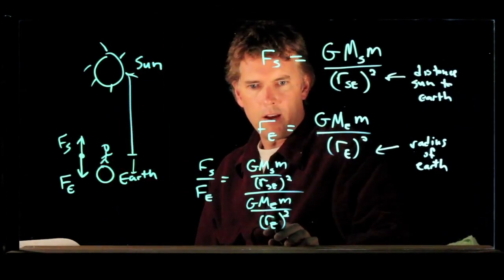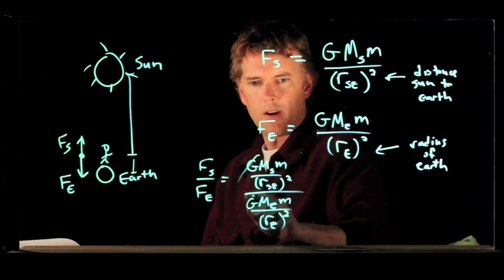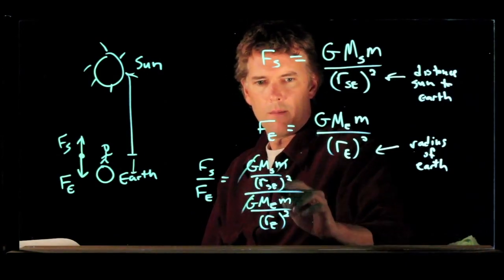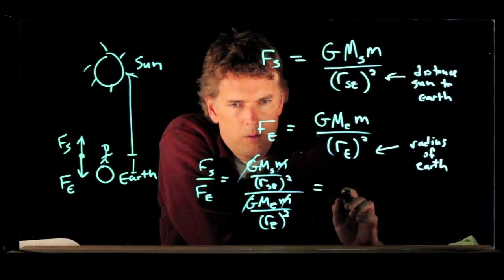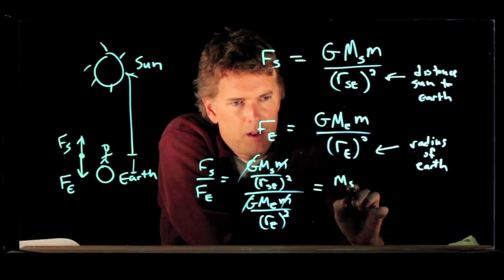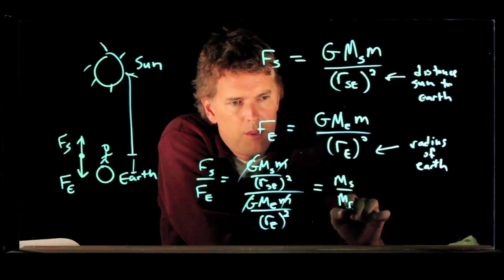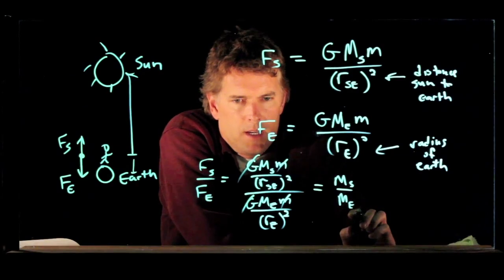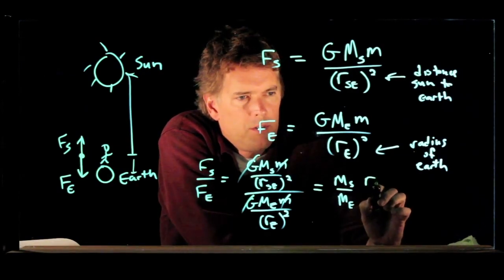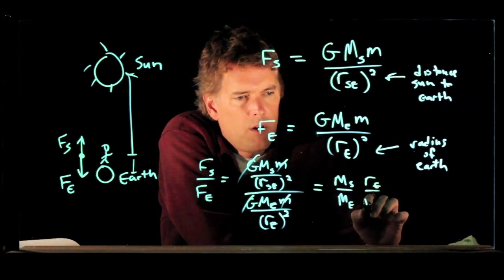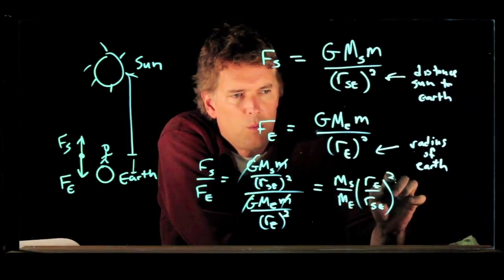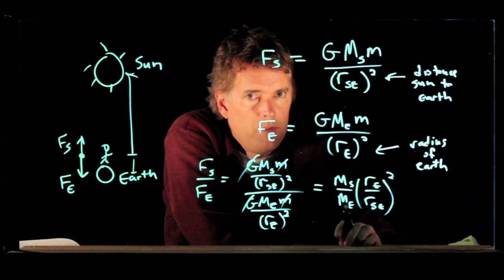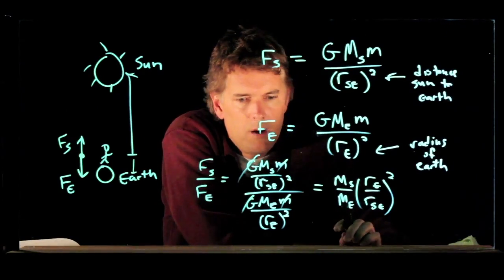And so a few things cancel out here, right? The big G cancels out. The little m cancels out. And we can rewrite this as the following: mass of the sun over mass of the earth times r sub e over r sub s e quantity squared. And those numbers we can look up.